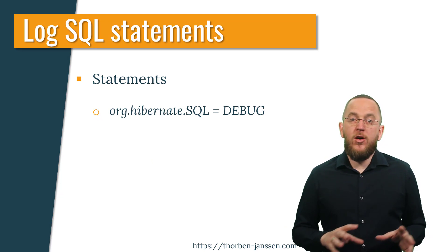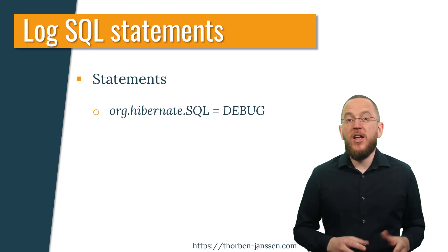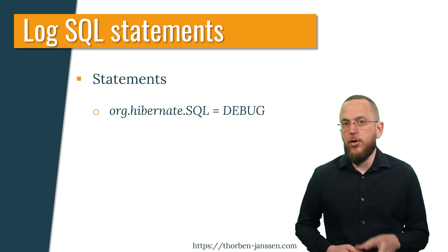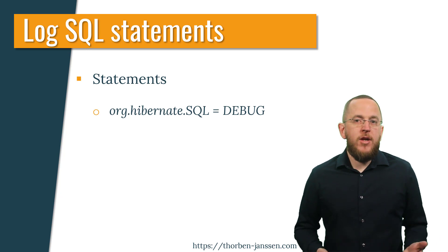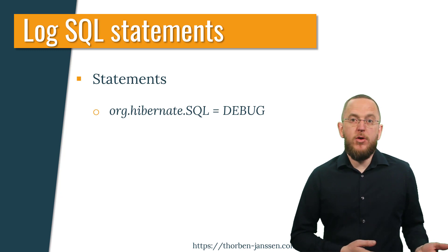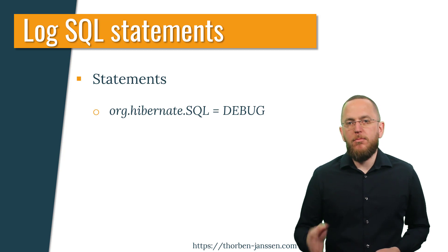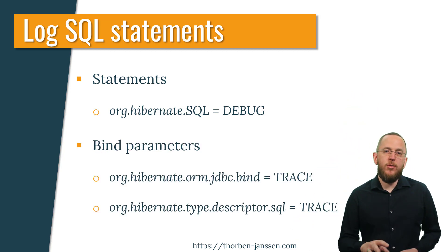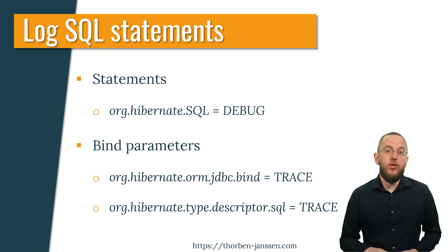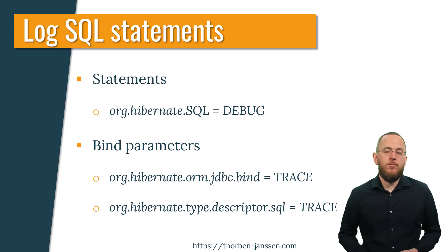The better way to activate the logging of executed SQL statements is to set the log level of the org.hibernate.sql category to debug, or the corresponding log level of your log framework. Hibernate will write the SQL statements without any information about the values bound to the JDBC parameters or extracted from the query result. If you also want to get this information, you have to set the log level of org.hibernate.type.descriptor.sql or org.hibernate.orm.jdbc.bind to trace. I will show you an example of this in the next section of this video.